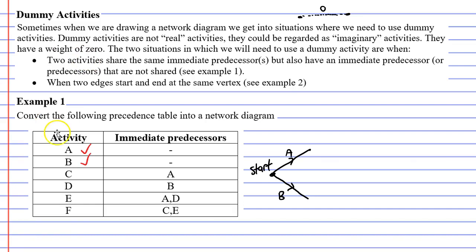Now moving on to activity C, it needs to come after activity A. So to finish activity A we put down a vertex and then activity C comes out from that point. So that's activity C completed now. Next activity D comes after activity B. So we complete activity B with a vertex and then activity D comes out from there. And we tick off activity D.